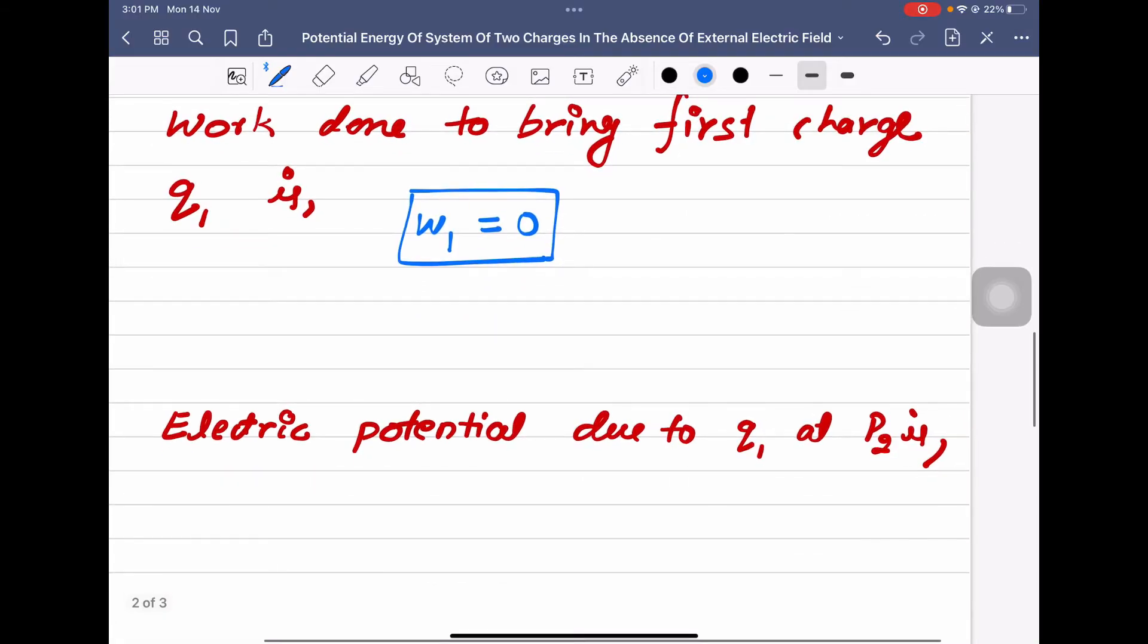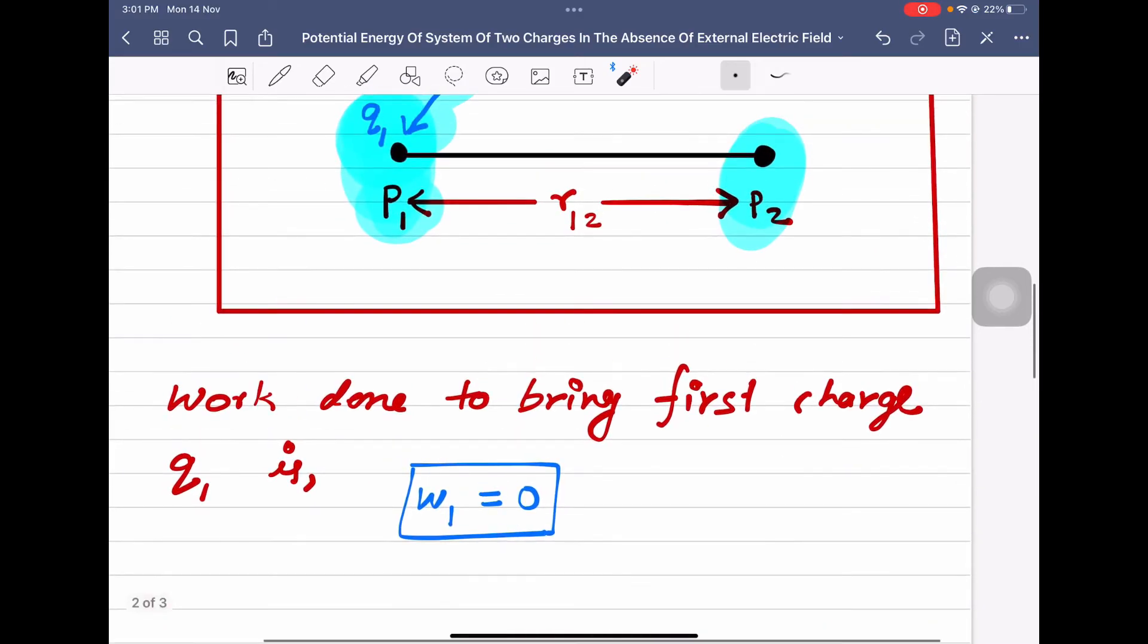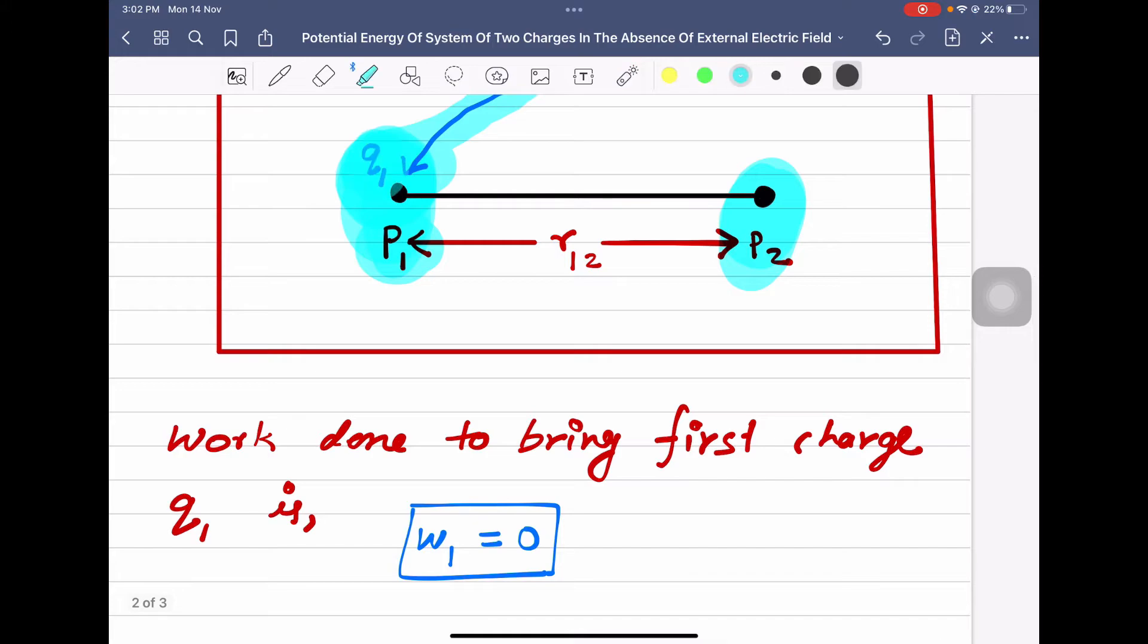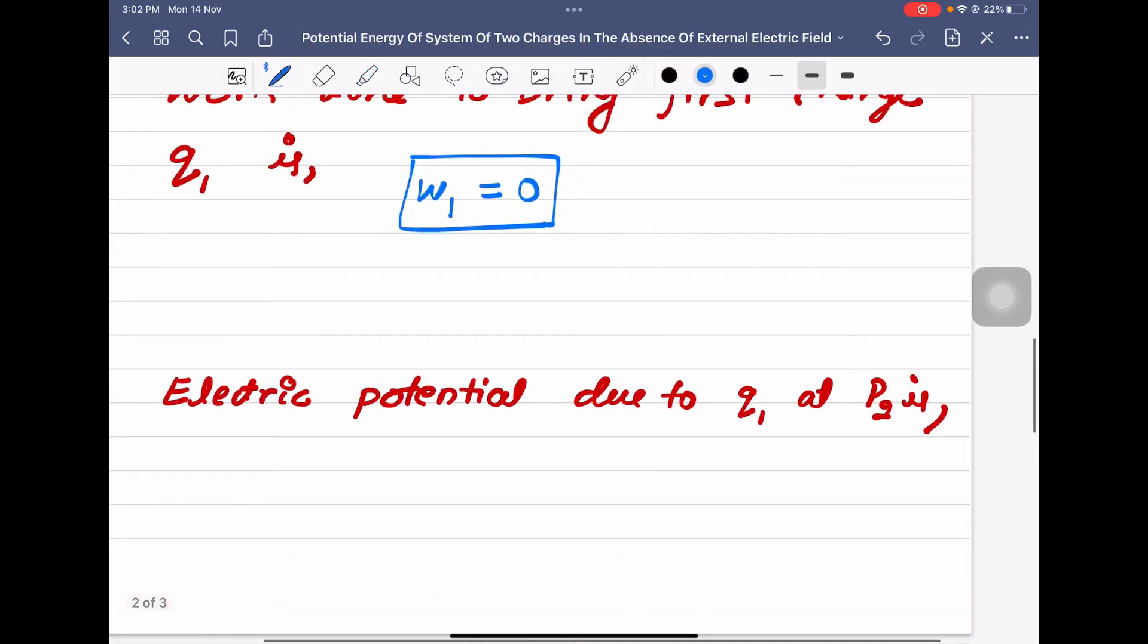Electric potential due to Q1 at P2, what is the equation for electric potential? I will write V1 is equal to 1 by 4π epsilon 0 into Q1 divided by R12, since the distance between P1 and P2 is R12.